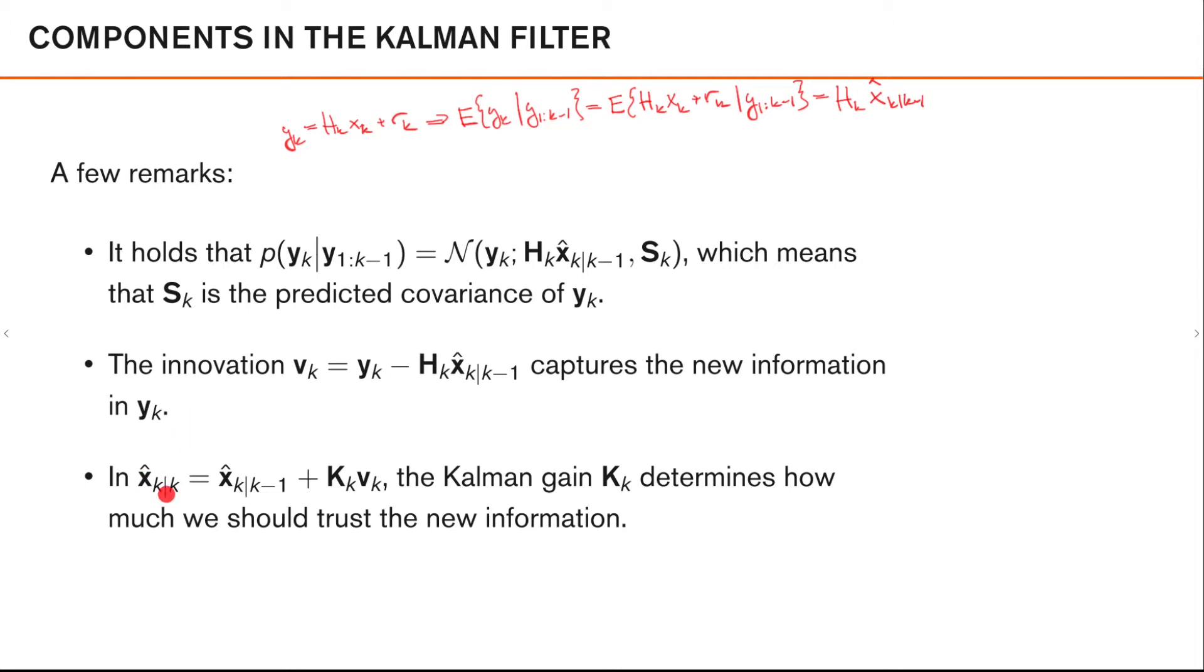And finally, when we calculate the updated mean like this, the Kalman gain is the factor which will determine how much we should trust the innovation over our old information in the predicted mean.